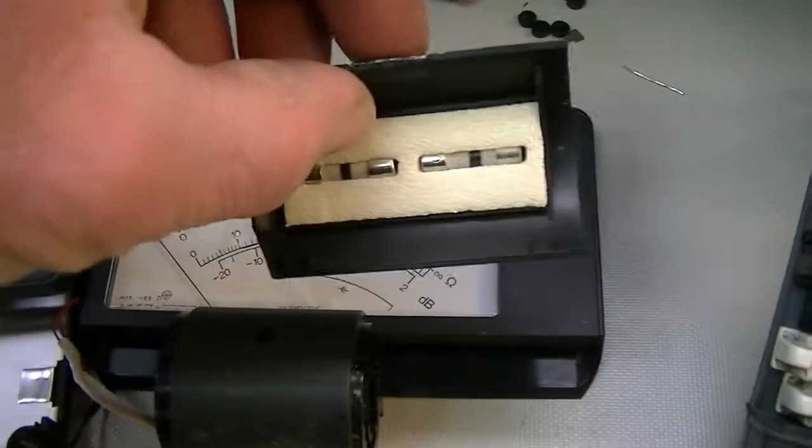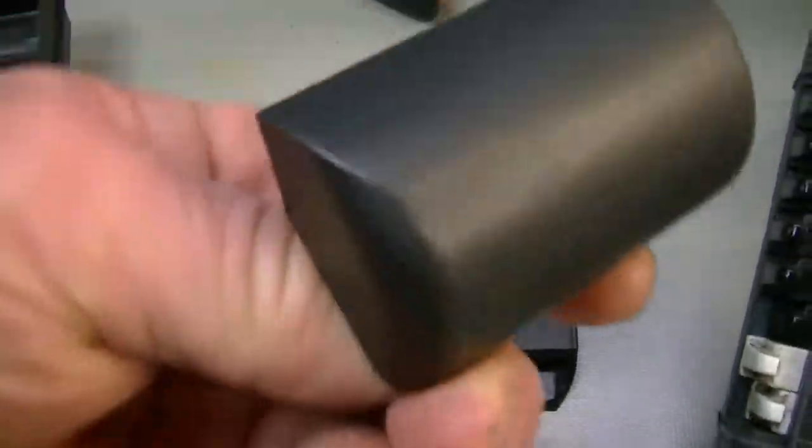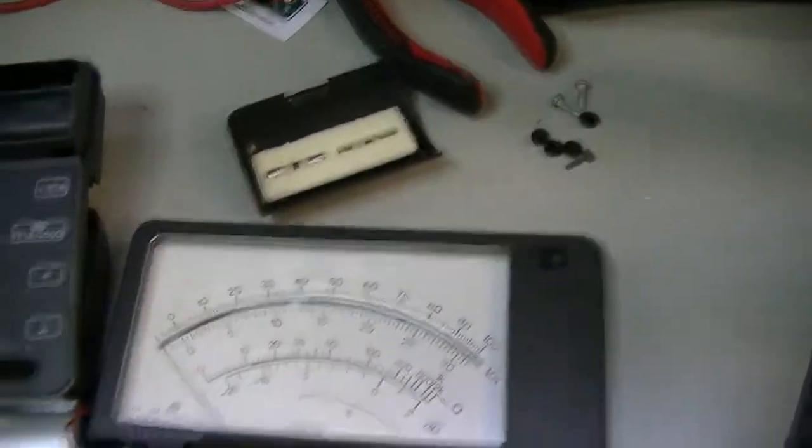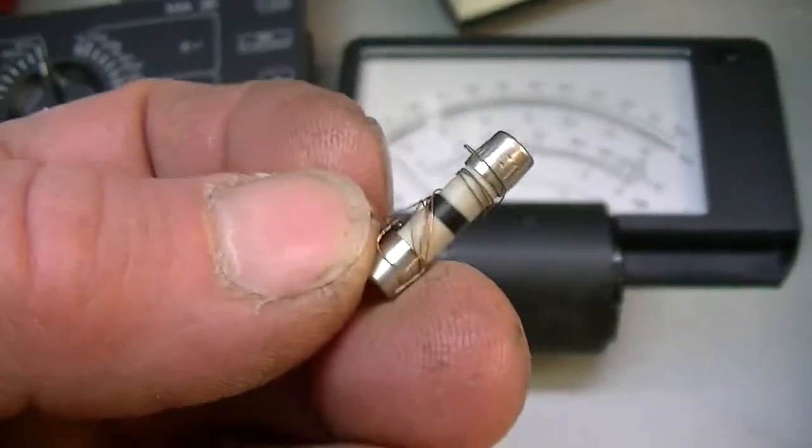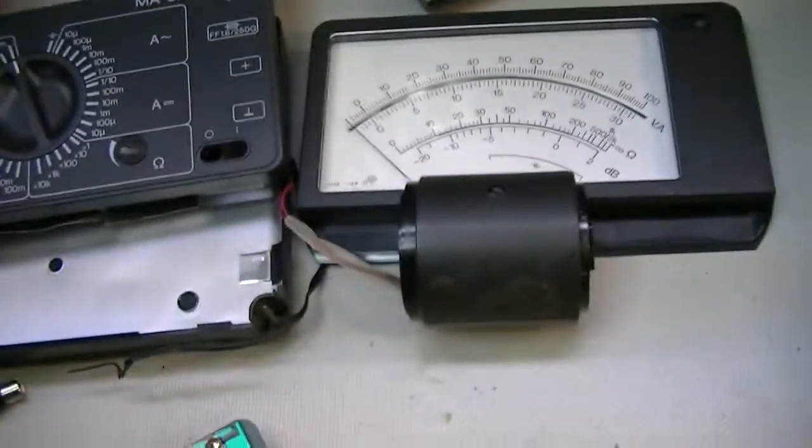But you know, there's two perfectly good fuses in there. That's the cover for the battery. Why you would wrap that thing with a little tiny fine wire and hope that's going to make contact, which it didn't, it was making intermittent contact. I don't know.